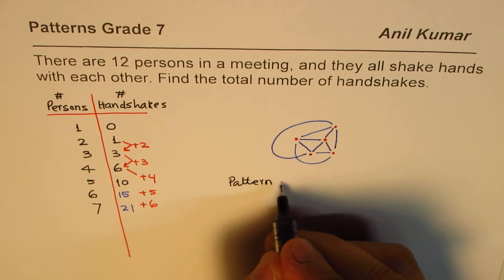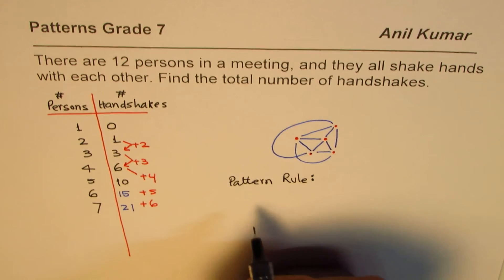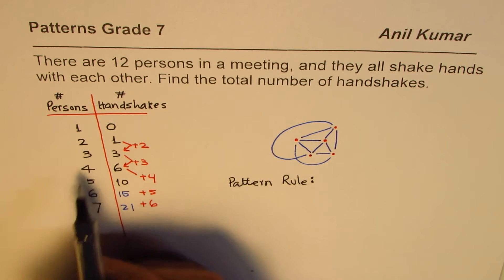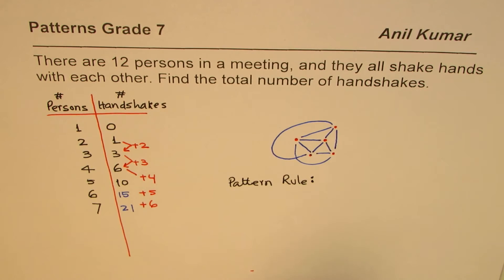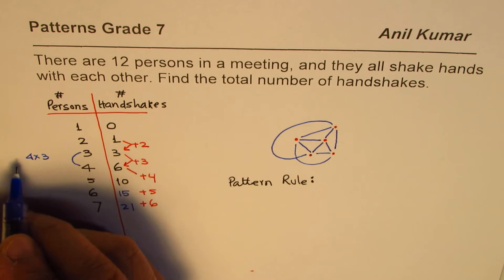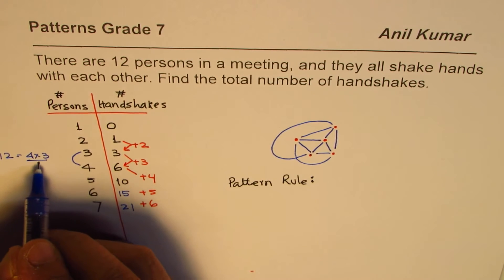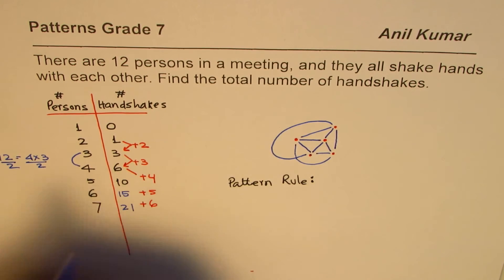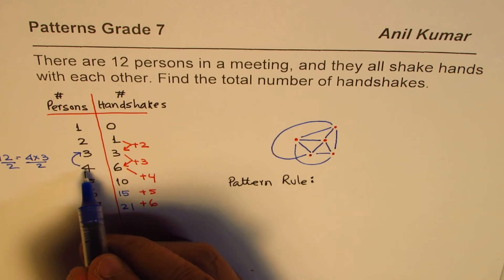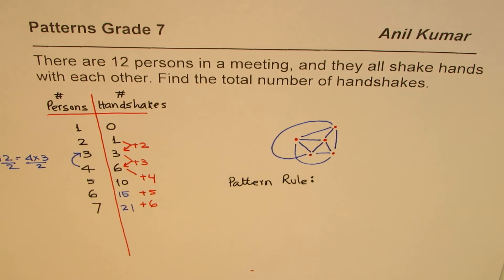So let us try to figure out a pattern rule. Here is when the pattern rule comes handy. Now the pattern rule for this is what? Let's try to see the relation. What is 4 times 3? Let's multiply these numbers. We know 4 times 3 is 12. How do I get 6? If I divide that by 2, we get 6. That means if I times the number with the previous number of persons and divide by 2, I may get the next number.